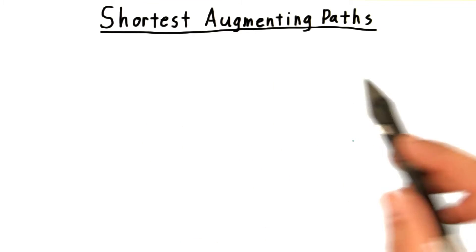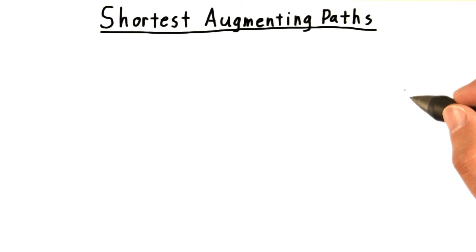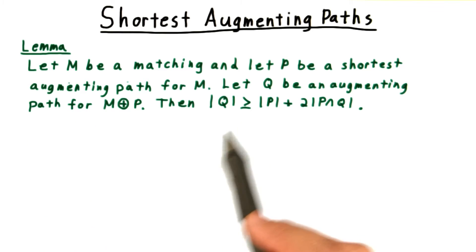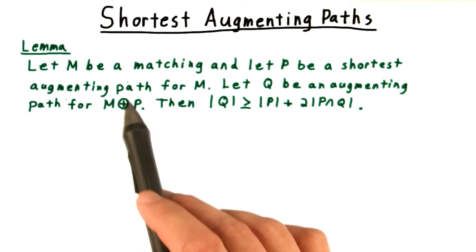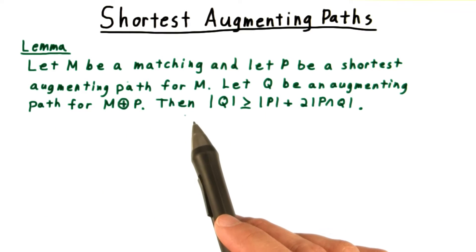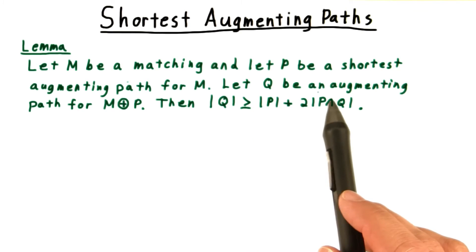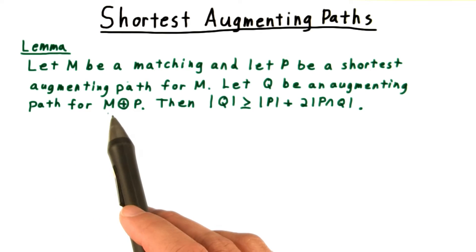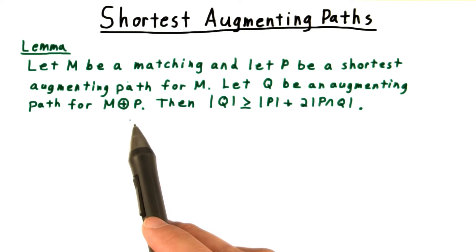This next lemma will characterize the effect of choosing to augment by a shortest path. We'll let m be a matching, and we'll let p be a shortest augmenting path for m. And then we'll let q be an augmenting path for m augmented by p.